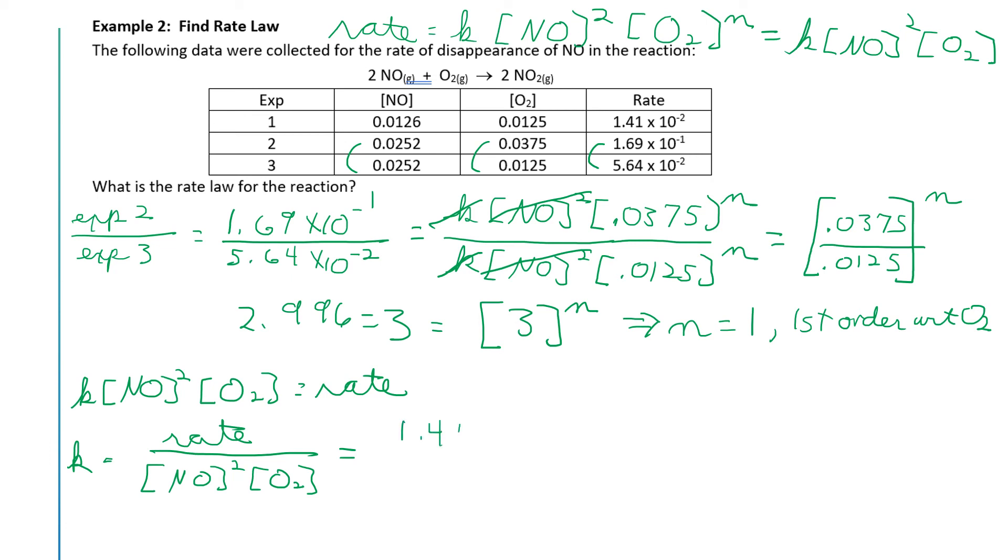We have 1.41 times 10 to the negative 2 divided by NO squared, which is 0.0126 squared, and O2, which is 0.0125. And if I run those numbers through my calculator, 1.41 times 10 to the negative 2 divided by 0.0126 and divided by 0.0125, we end up with a number for the rate constant of 89.5.